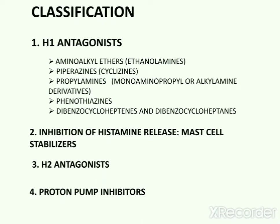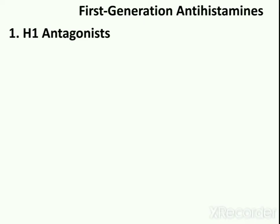The biggest subcategory in this classification is H1 antagonists, which are further subdivided into various categories according to their structural features: aminoalkyl ethers, piperazines or cyclizines, propylamines or monoaminopropyl or alkylamine derivatives, phenothiazines, and dibenzocycloheptenes. H1 antagonists are also known as first generation antihistamines.